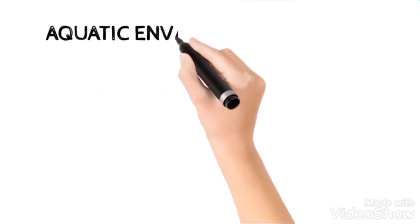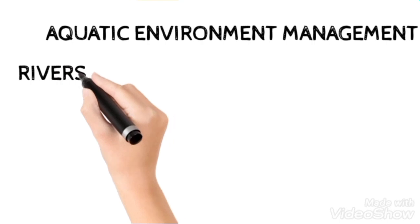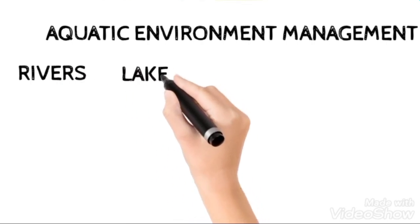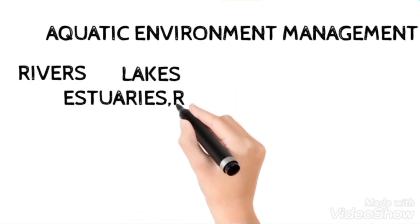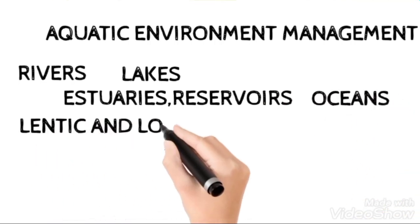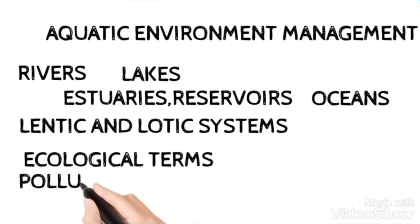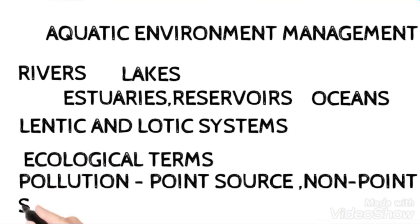CMFRI, ICAR, CIFE, etc. should be thorough. Coming to the five percent weightage, first is the Aquatic Environment Management. You should be very much clear with the location of the rivers, lakes and names, in which also you need to distinguish lentic and lotic system. Ecological terms like biodiversity, ecology should be very much clear, and there will be a direct question as a gift to you based on the examples of Poisson's and non-Poisson's solution.